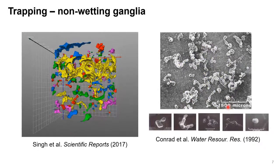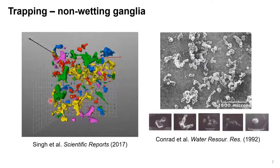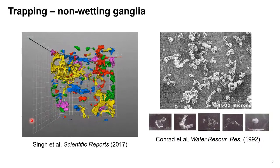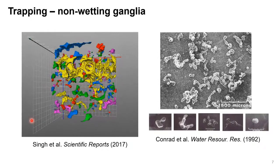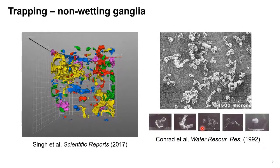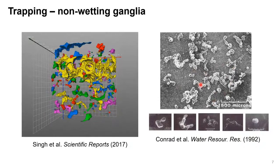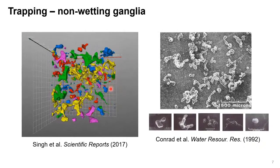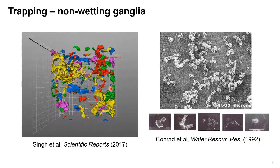The image on the left shows the final situation after complete imbibition. Different colors show different disconnected components of oil — you can't move it unless you change the flow rate or change the surface properties by injecting surfactant. I intentionally put a picture on the right to show our initial efforts decades ago to characterize non-wetting trapped clusters, which was destructive — we dissolved the rock. Nowadays because of tomography we can get the same information non-destructively.